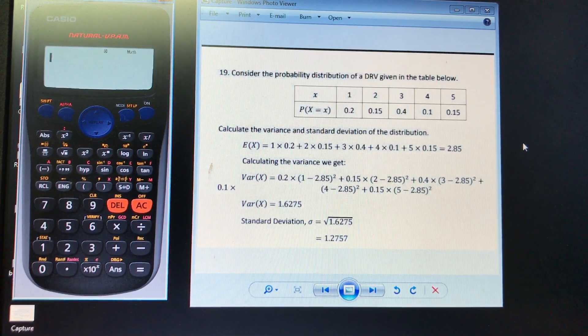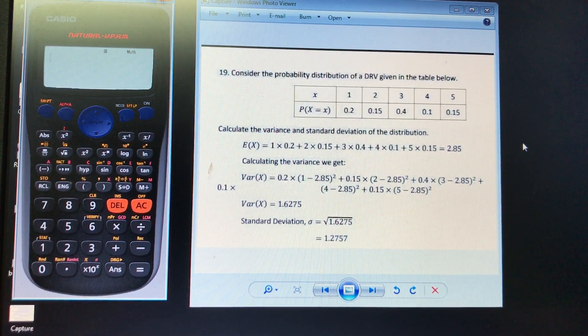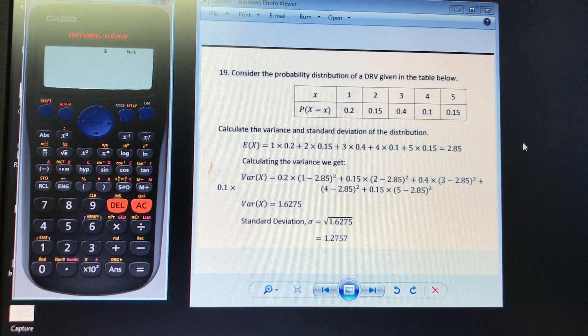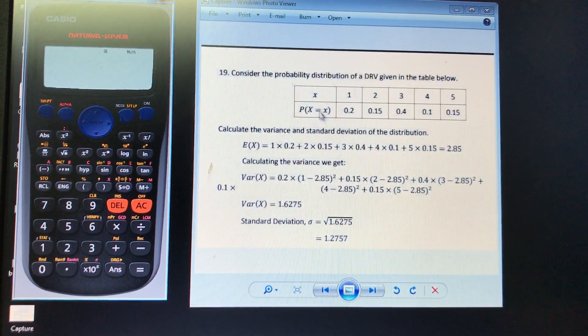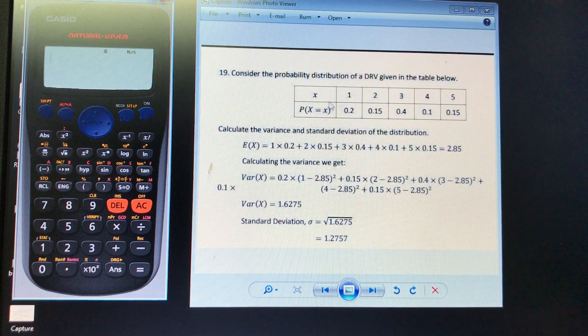Alright guys, here what we're going to do is we're going to calculate the expected value and the variance using our Casio calculator from this discrete probability distribution.